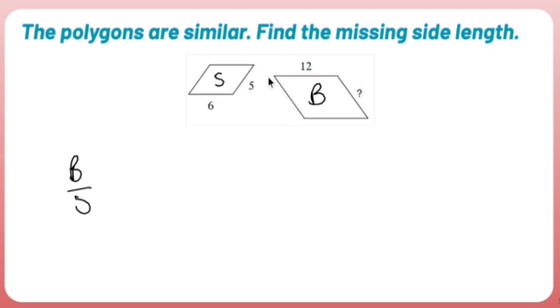So if I look at this, 12 matches up with the 6 on the small. So I'm going to say 12 over 6. That's going to equal, I don't know, on the big one. So I'll put an x over 5 on the small one.